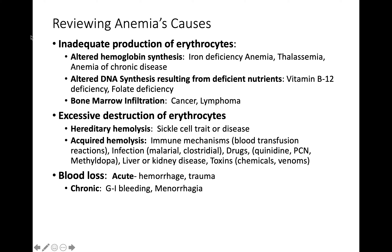Excessive destruction of erythrocytes can be hereditary, such as sickle cell trait or disease, or acquired through immune mechanisms like blood transfusion reactions. Infections including malaria and Clostridium, and drugs such as quinidine, penicillin, and methyldopa can also destroy erythrocytes. Liver or kidney disease affects coagulation factors and erythropoietin, and toxins or venoms — such as snake venom — can kill through erythrocyte destruction.